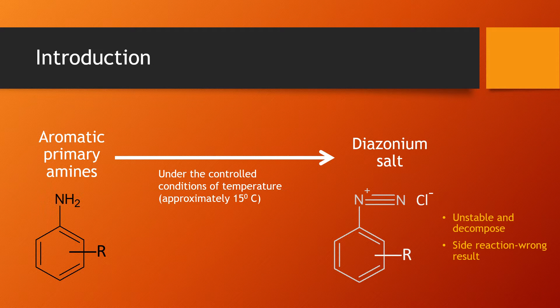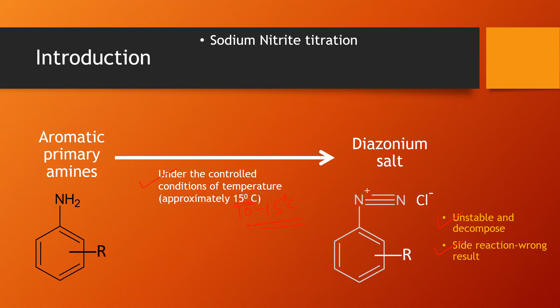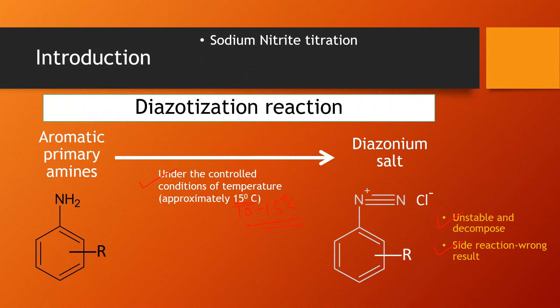These diazonium salts which are formed are unstable and they can get readily decomposed at elevated temperatures, which can easily lead to side reactions and may give wrong results. To eliminate this problem, the titration is usually carried out at low temperatures — approximately 15 degrees, or for certain amines, the temperature is maintained between 10 to 15 degrees Celsius. Thus, this is also called sodium nitrite titration and since the diazotization reaction is involved, we call it diazotization titration.